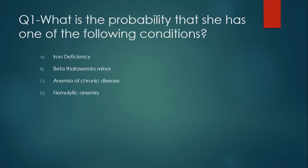Hemolytic anemia usually presents with anemia and jaundice, although in some patients with mild hemolysis the jaundice may not be clear. In hemolytic anemia such as immune hemolytic anemia, there is a good possibility the patient will develop splenomegaly. In this patient, there is no jaundice and no splenomegaly, and therefore the possibility of hemolytic anemia is less, if we compare it to the possibility of iron deficiency anemia.